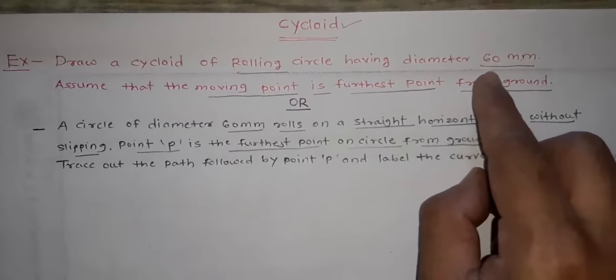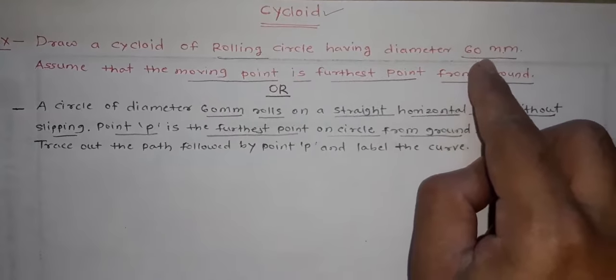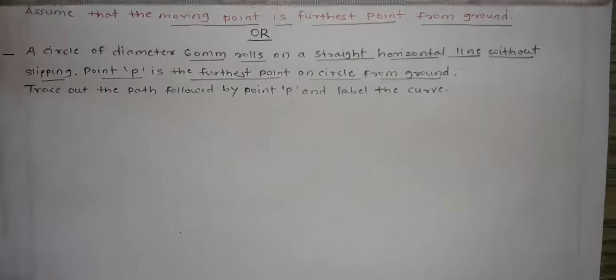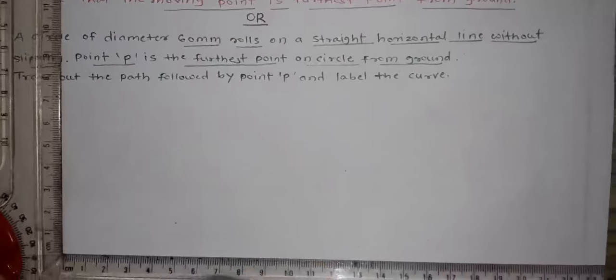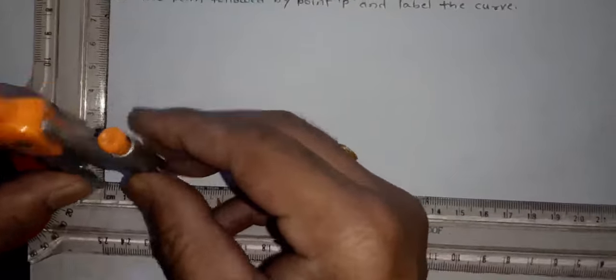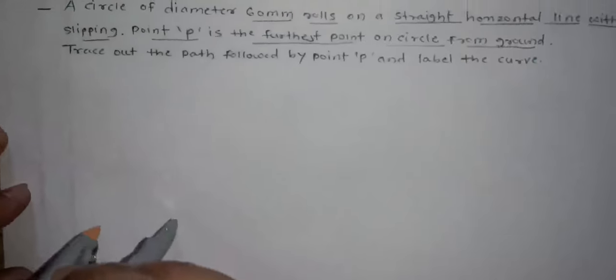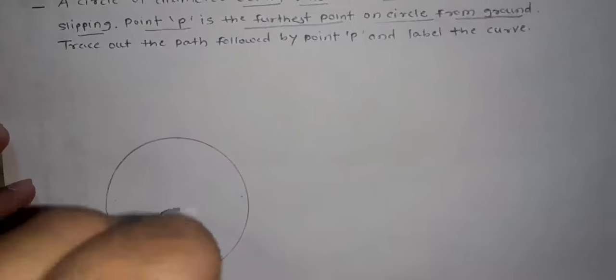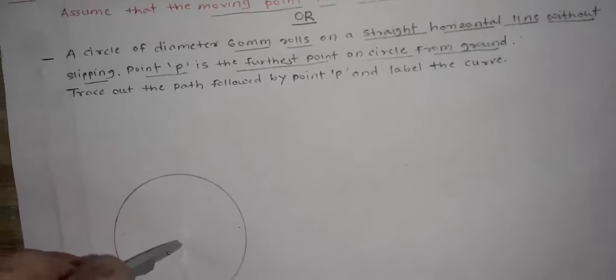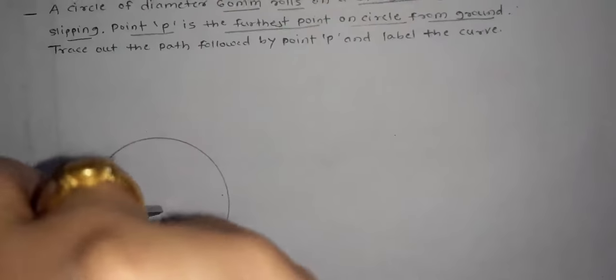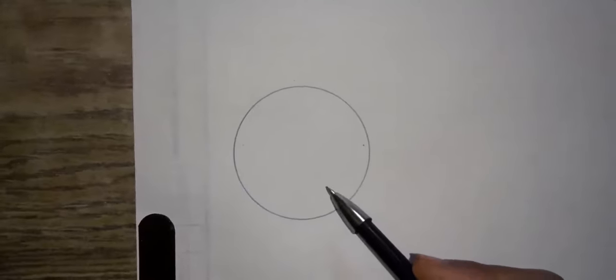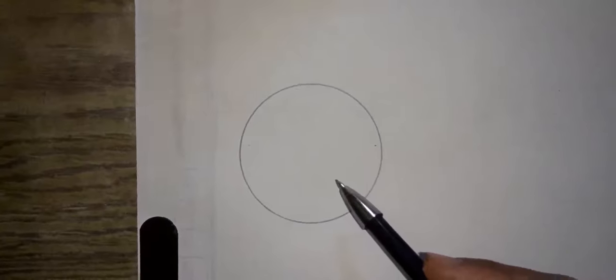So first of all you have to draw a circle of 60mm diameter and for that take a radius of 30mm in a compass. With 30mm radius, you have to draw a circle and divide this circle into 8 number of equal parts.